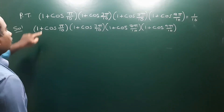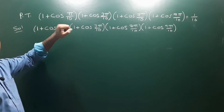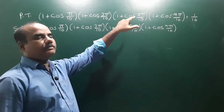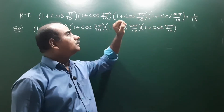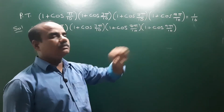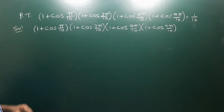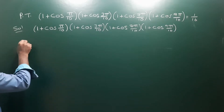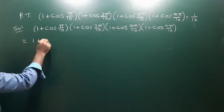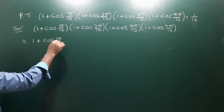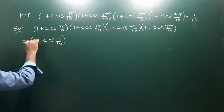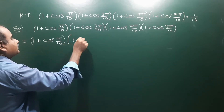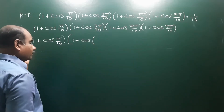The next problem: prove that (1 + cos π/10) × (1 + cos 3π/10) × (1 + cos 7π/10) × (1 + cos 9π/10) equals 1/16.